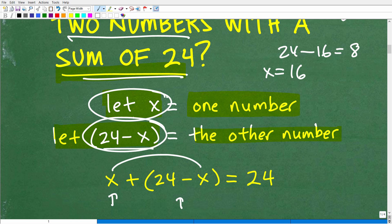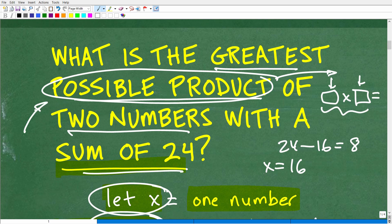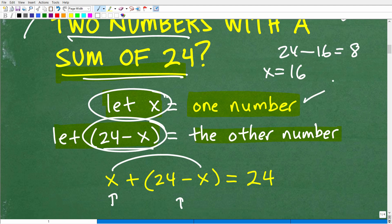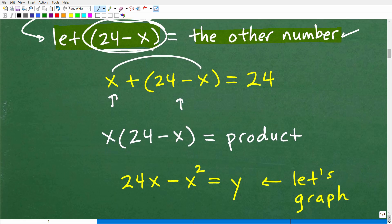We have one number X and this other number 24 minus X. These are two representations of the two numbers involved. But we have to look at this part of the problem now. What is the greatest possible product? The product is going to be these two numbers being multiplied by one another. So this would be the product: X times (24 minus X). That would be the product.